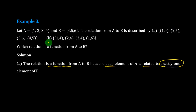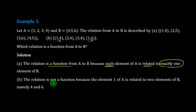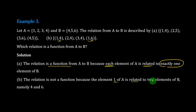You can see that the relationship is not a function. The relationship is not a function because the element 1 of A maps to multiple elements. You can see that the element 1 of A appears more than once, so the relationship is not a function.